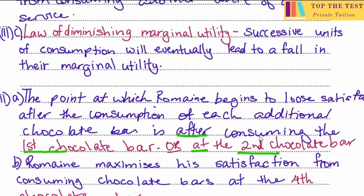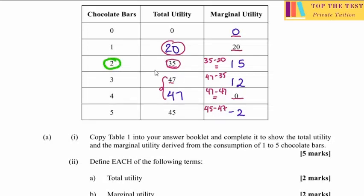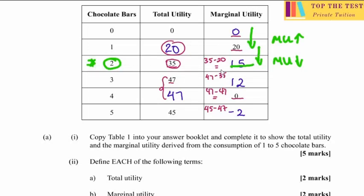It's just a technicality in the wording — either after the first or at the second chocolate bar. Looking at the table, the MU starts to fall at the second bar. When we move from 0 to 1 unit, the MU actually increased. But from the first to the second chocolate bar, MU fell from 20 to 15 — so this is the point at which his marginal utility, and therefore satisfaction, started falling.